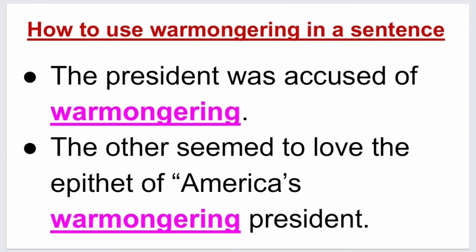Now we have learned the meaning of the word warmongering. Let's learn how to use it in a sentence. Our first example is: the president was accused of warmongering. Our second example is: the author seemed to love the epithet of America's warmongering president.